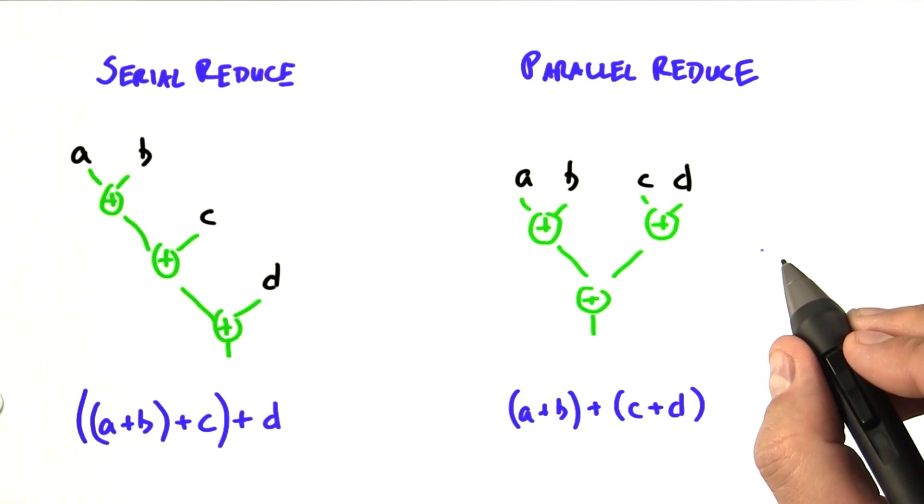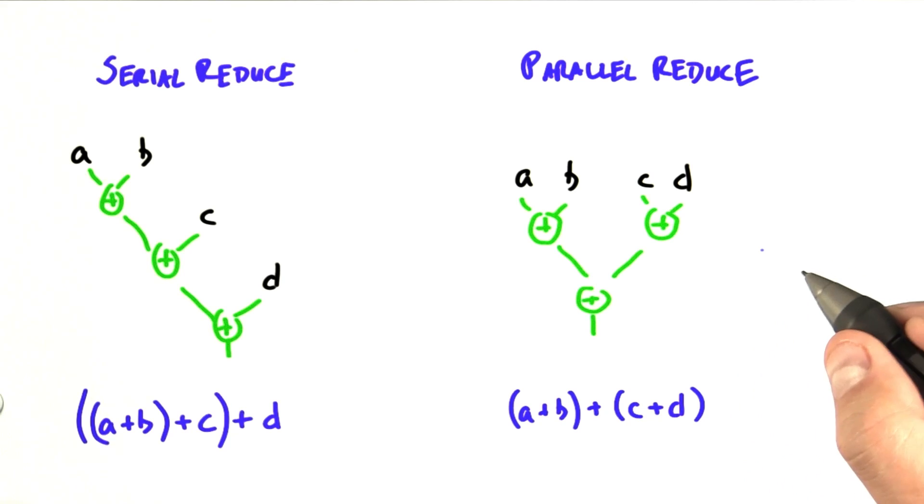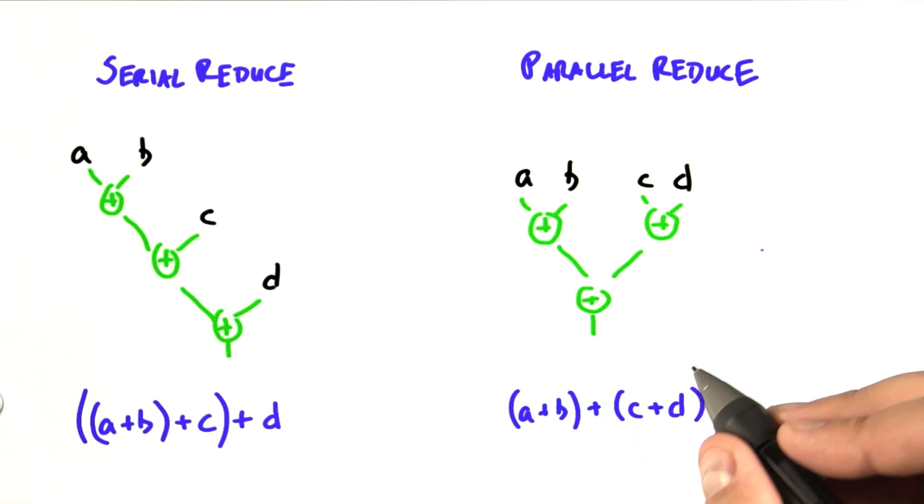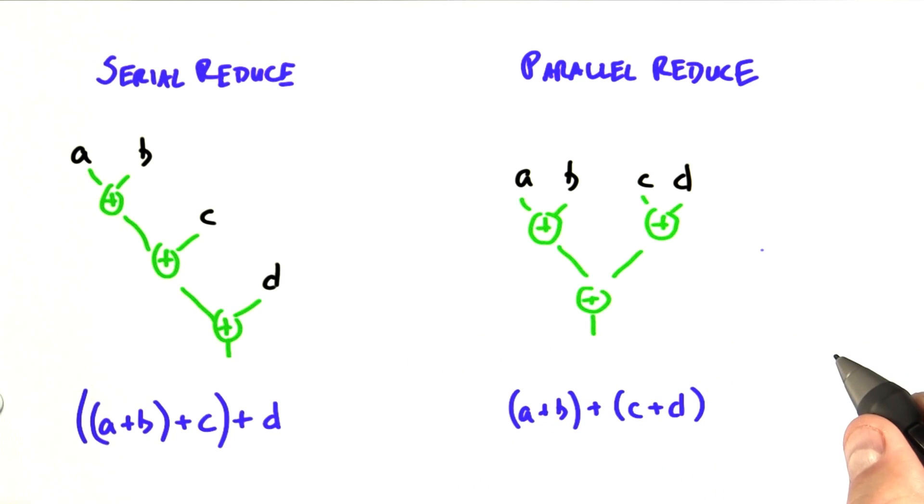Now you see why associativity was a necessary quality of the reduction operator. We can reassociate operations to expose more concurrency, then we can run concurrent operations in parallel to reduce the time to solution.